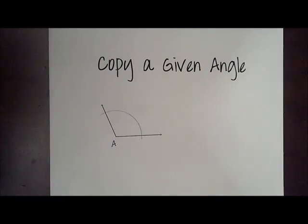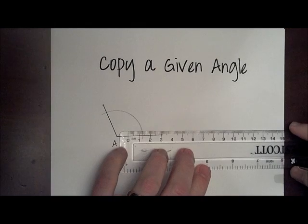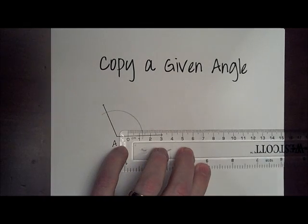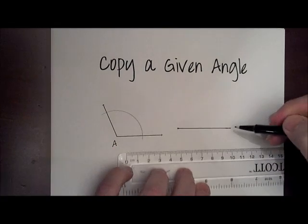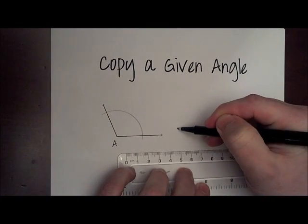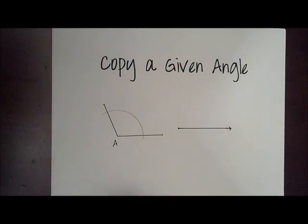Alright, you're going to construct yourself a ray representing one side of the angle. I'll just do that next door here. There's a ray. Just need to make that long enough so that when you strike the same arc, it will strike this ray somewhere.